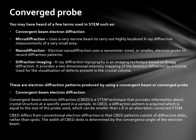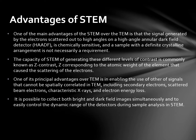One of the main advantages of the STEM over the TEM is that the signal generated by electrons scattered out to a high angle on a high angle annular dark field detector is chemically sensitive, and a sample with a definite crystalline arrangement is not necessarily a requirement. The capacity of a STEM to generate these different levels of contrast is commonly known as Z-contrast, Z corresponding to the atomic weight of the element that caused the scattering of the electrons. STEM also enables the use of other signals that cannot be spatially correlated in TEM, including secondary electrons, backscattered electrons, characteristic X-rays, and electron energy loss. It is possible to collect both bright field and dark field simultaneously and easily control the dynamic range of detectors during analysis.